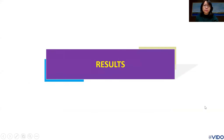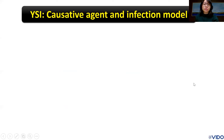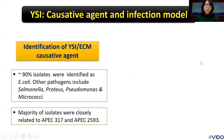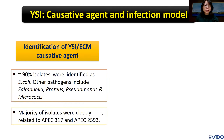Here are some results we have so far. First of all, we identified around 90% of isolates from infected birds in the field cases as E. coli, and other bacterial species were also found in the disease samples such as Salmonella, Proteus, Citrobacter, or Micrococcus. Most isolates have close relationships with the strains APEC-317 and APEC-2593, so in further experiments we used APEC-317 for our challenge study.